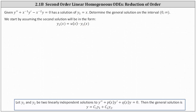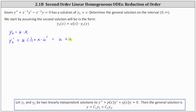I'll shorten this and write y2 equals u times x. The next step is to find y2 prime and y2 double prime, then perform substitution into the differential equation. To find y2 prime, we apply the product rule: the first function u times the derivative of x with respect to x, which is one, plus the second function x times the derivative of u with respect to x, which is u prime. Simplifying, we have u plus x·u prime.